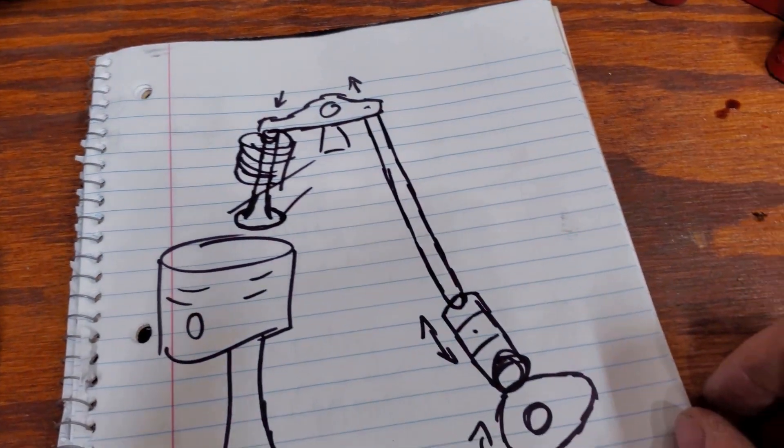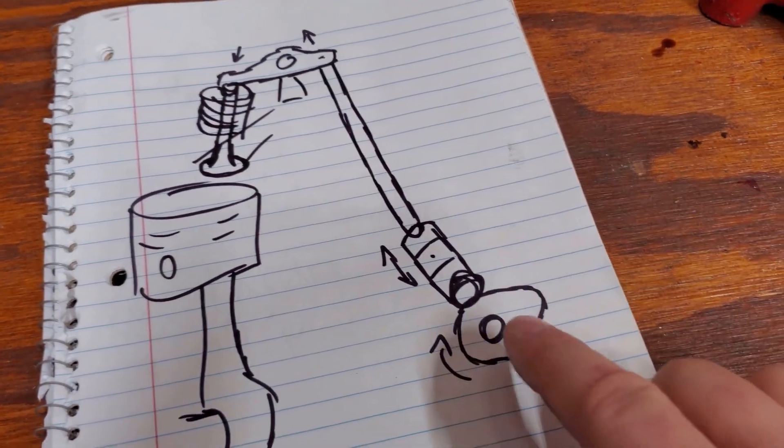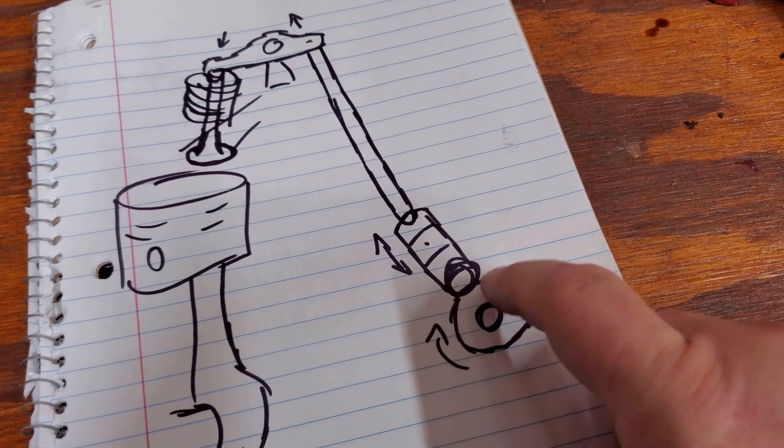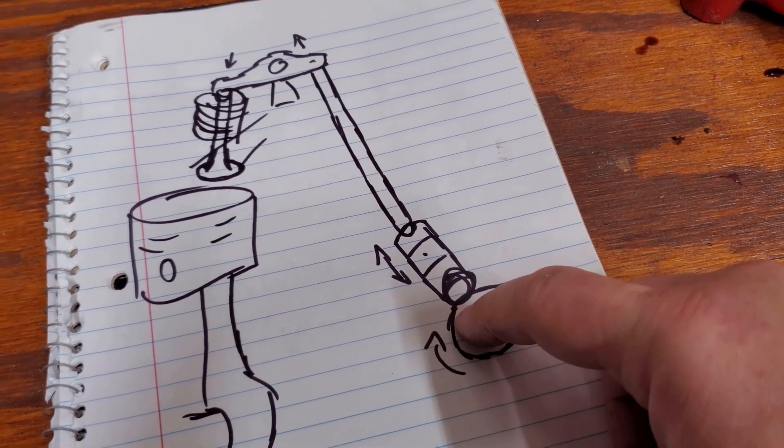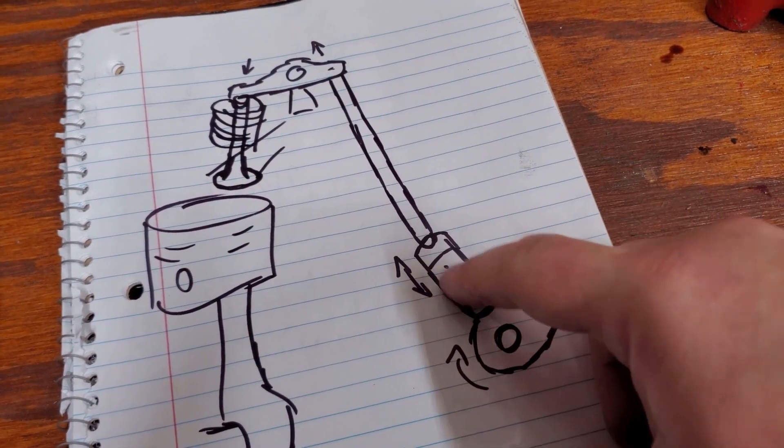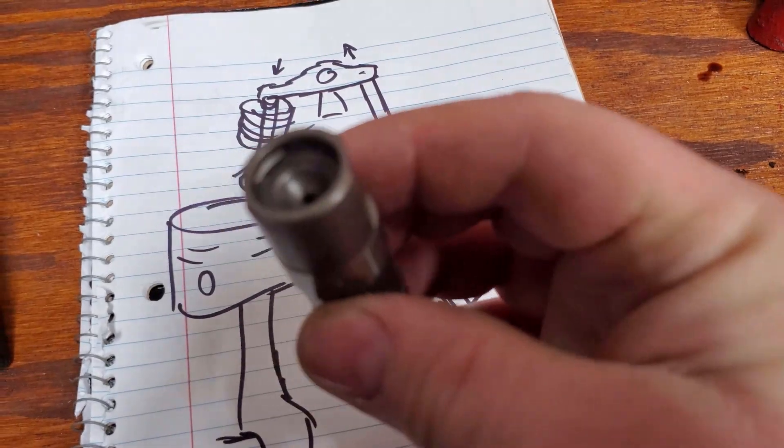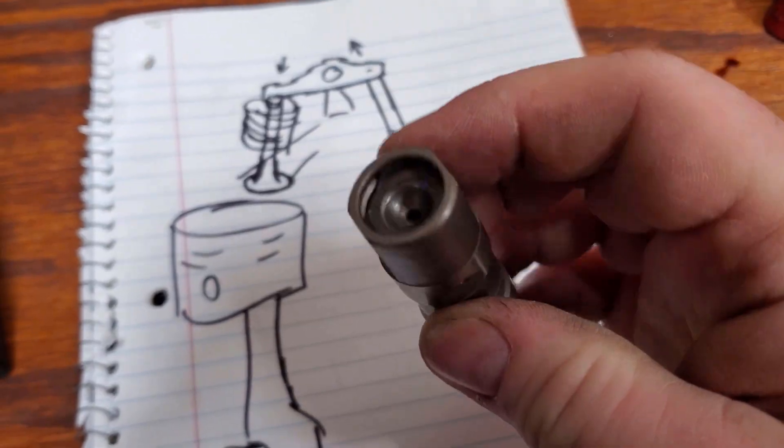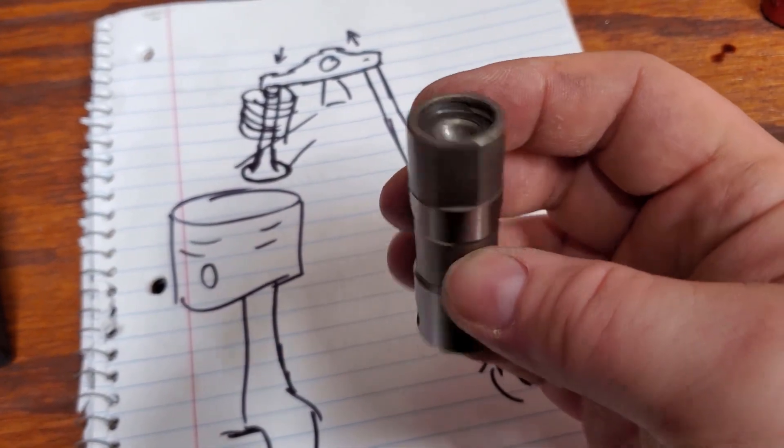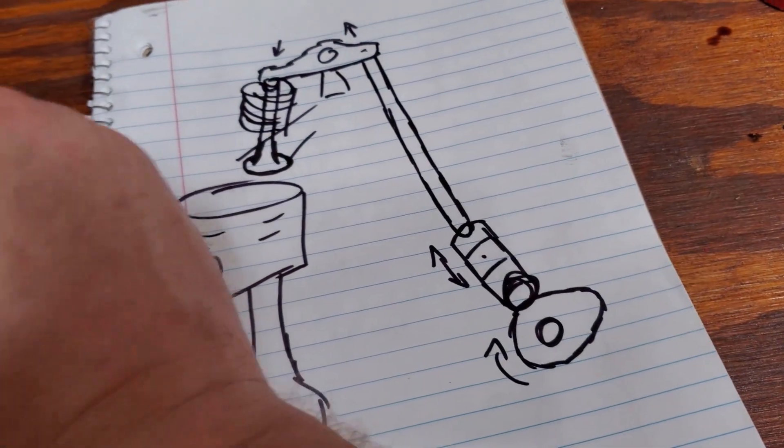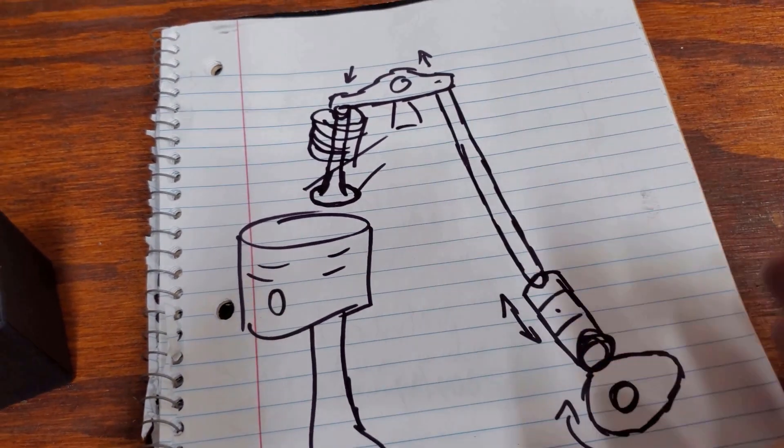Things that can fail here: I have seen on my car, for example, on this cam lobe the high part wore off so it was more round, so as it spun it never pushed the lifter up at all. Another way that this can fail is this lifter can come apart. This end piece can come out, or it can collapse internally to where it does not hold itself up. So when the cam pushes it up, it just compresses and doesn't push the push rod.